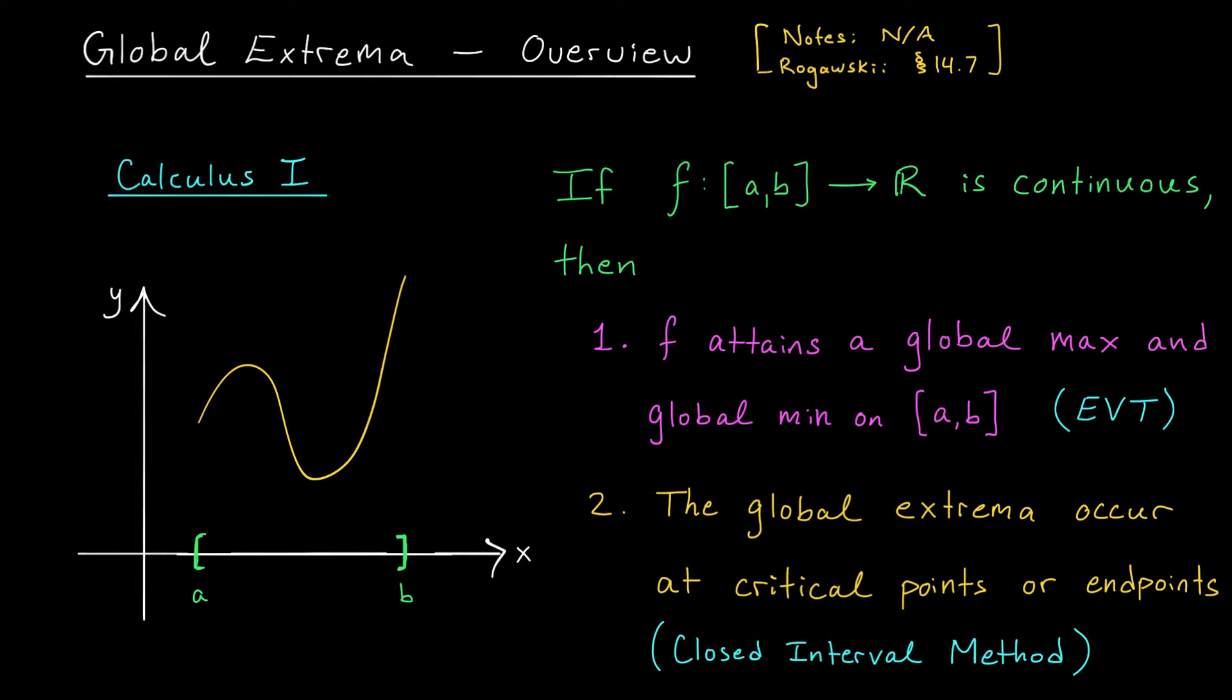This result says that the global max and min of your function on the interval a-b can't just occur anywhere in that interval. There are a few specific locations where you can find them. You can either find them at critical points inside the interval or possibly at the end points of the interval.